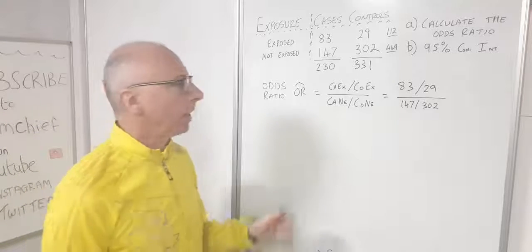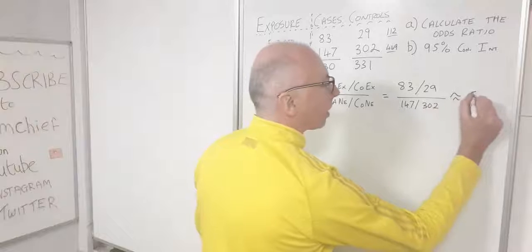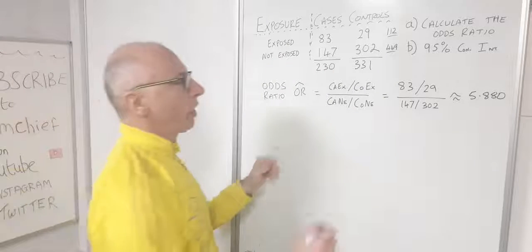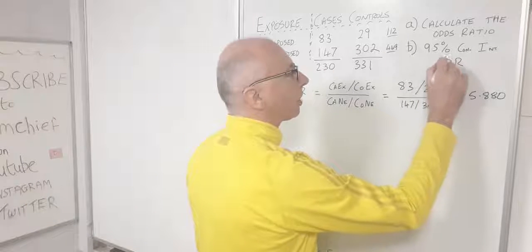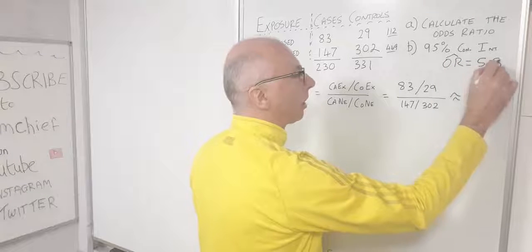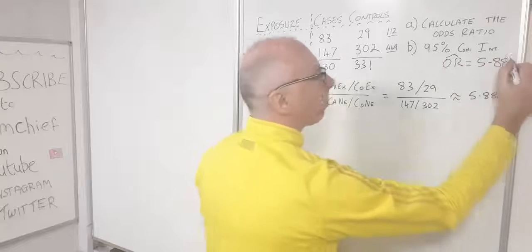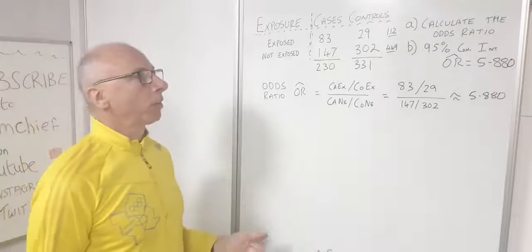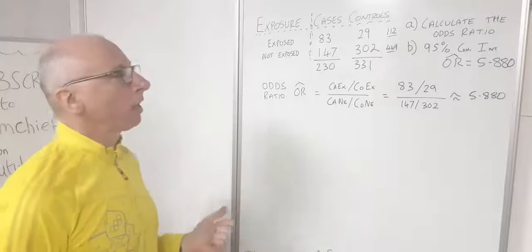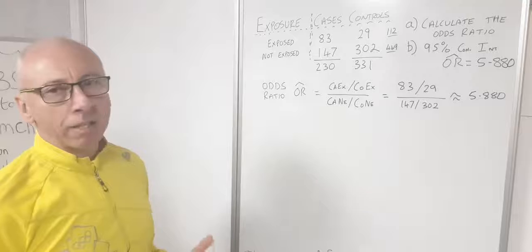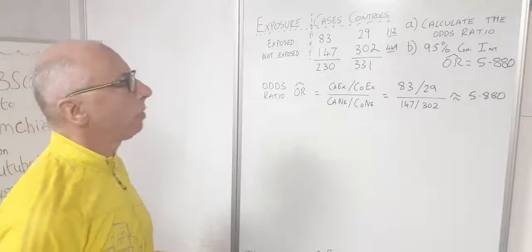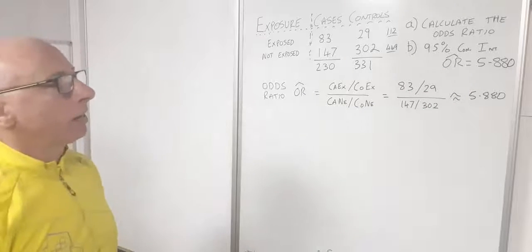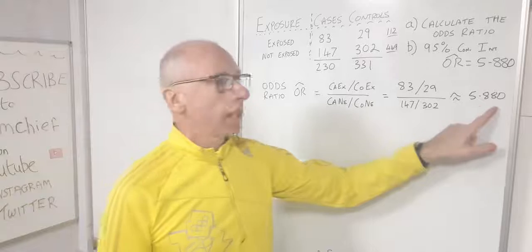Plugging this into your calculator gives a value of approximately 5.880 — that's our odds ratio. That's quite a high number, which gives us an indication that there is a positive correlation between the burning at the chemical plant and people getting bad symptoms from it.